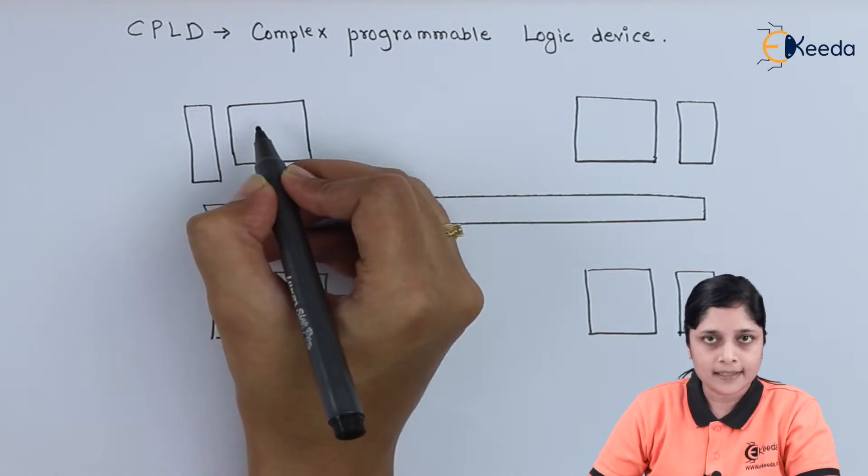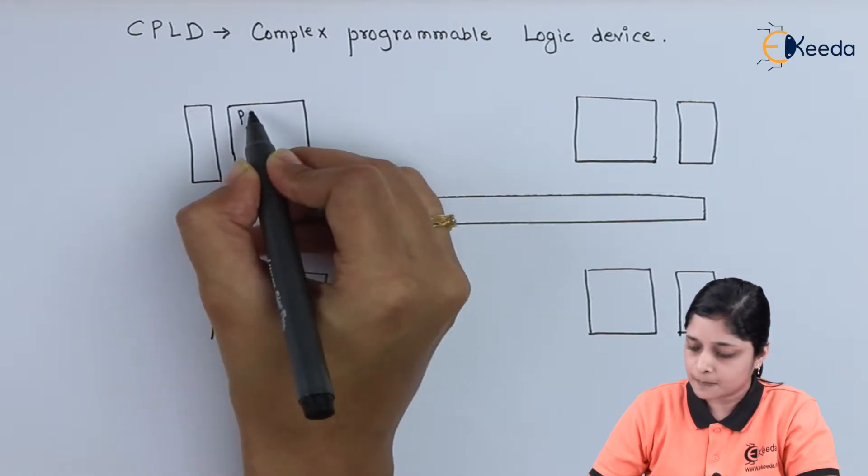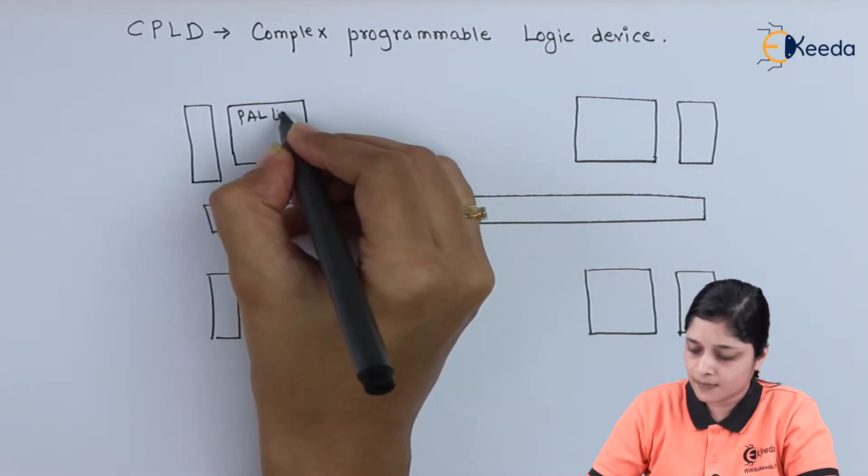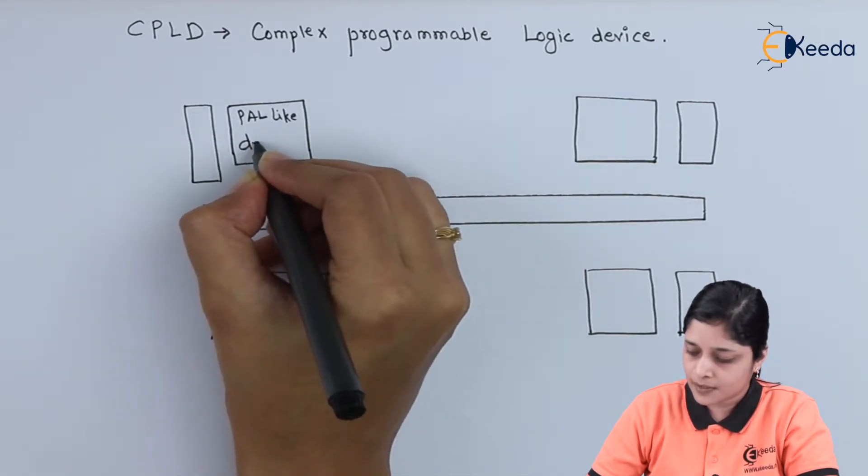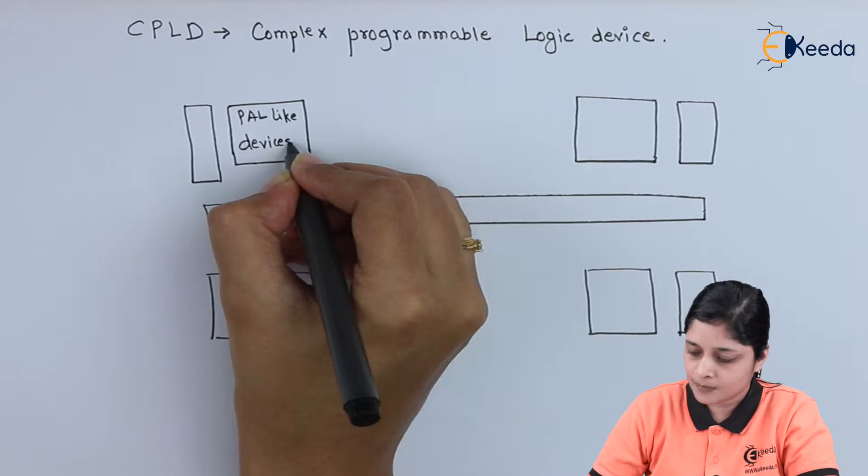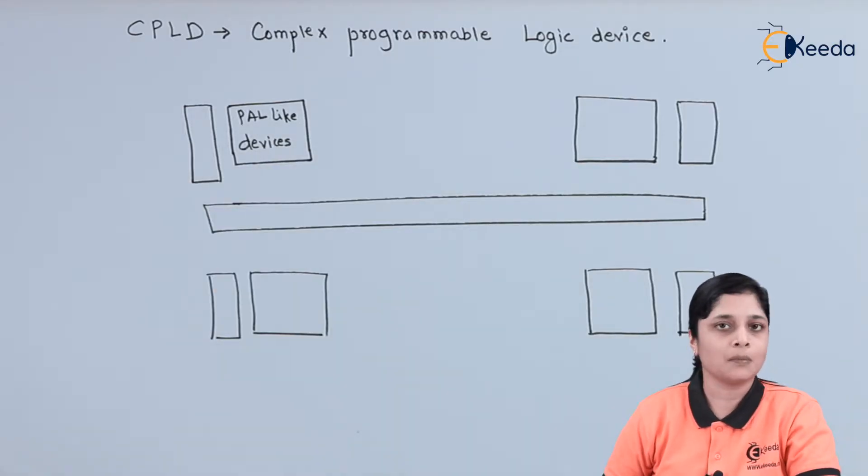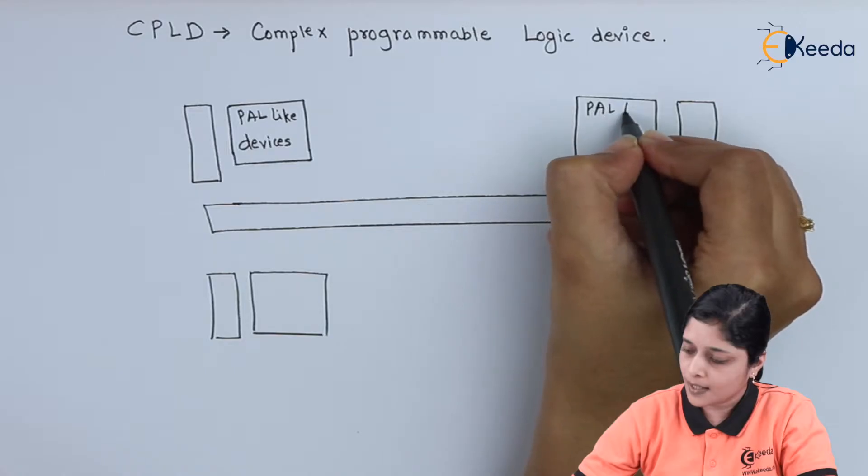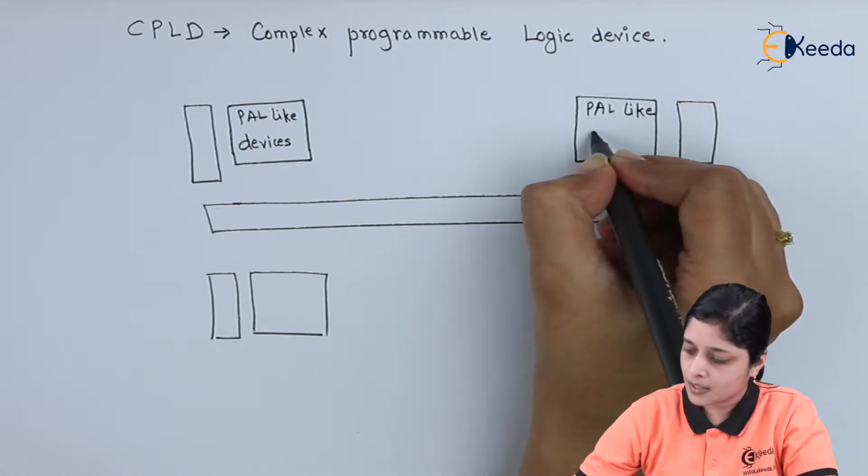So we will label these boxes. This is your PAL-like devices. It can be PAL or PLA. So all these are your PAL-like devices.